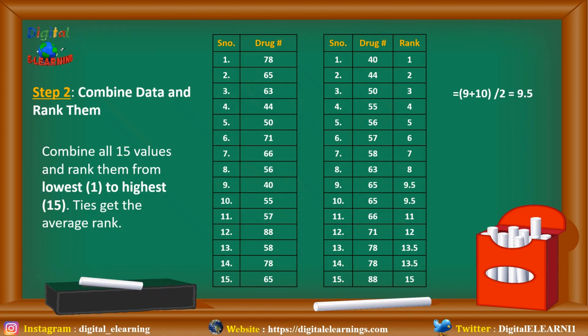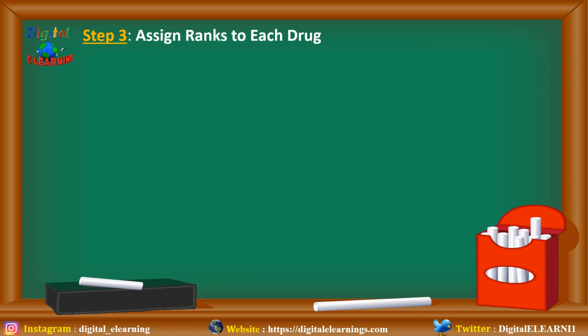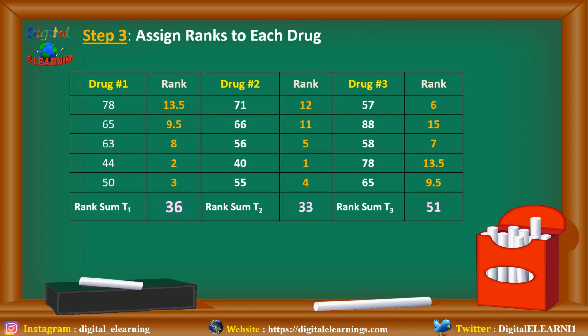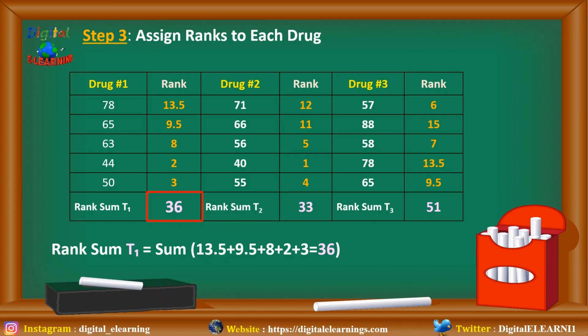Similarly, for the value 78, which is also tied, we take the average of ranks 13 and 14, which is 13.5, and assign it to both. In both cases the total number of ranks remains 15, matching the total number of entries. Step 3: assign ranks to each drug. For example, Drug 1 had values 78, 65, 63, 44, and 50. We assign the ranks calculated in Step 2 to each value. Then we calculate the rank sum T₁ for Drug 1, T₂ for Drug 2, and T₃ for Drug 3.